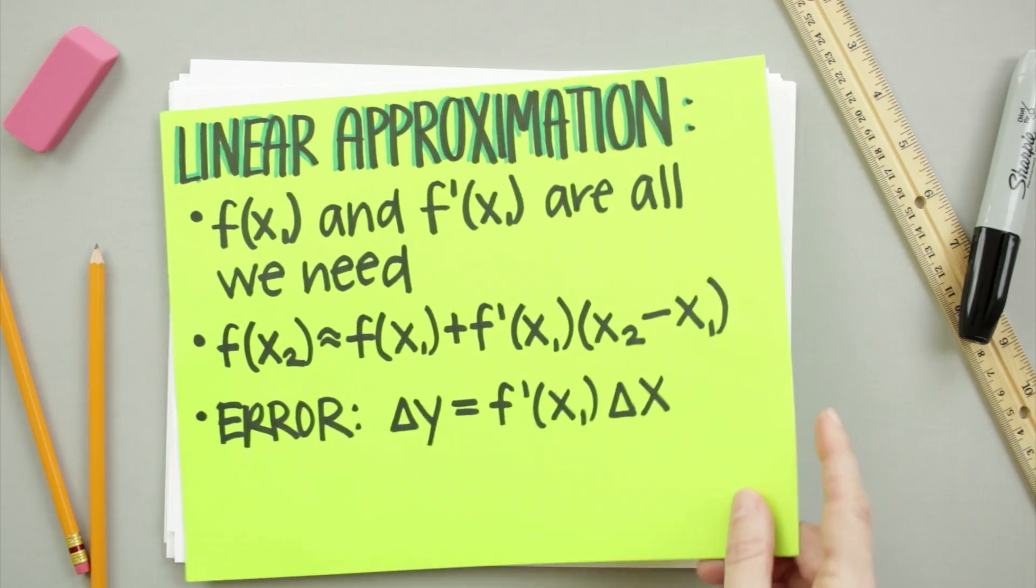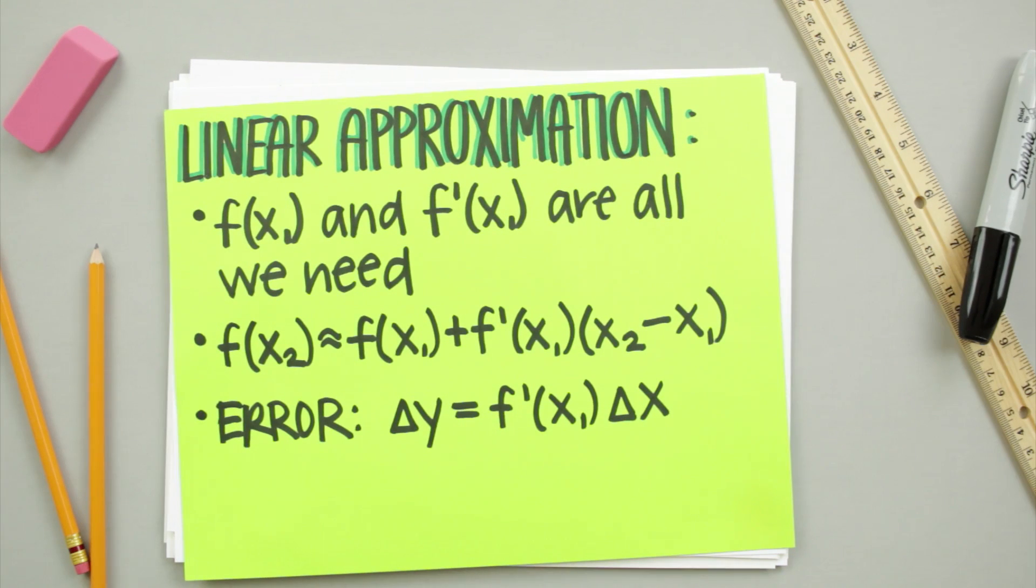To review, linear approximation just uses the y value and the derivative at a given x value in order to estimate values of a function that are close to the x value we're interested in. The formula for linear approximation is given by f is approximately equal to f plus the derivative at f times the difference between the two points x2 and x1.